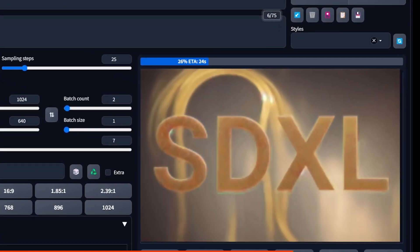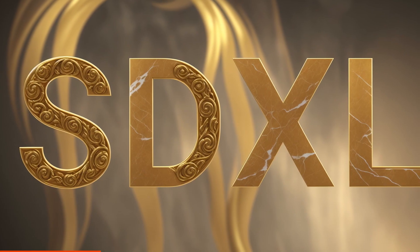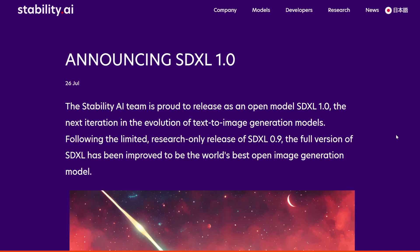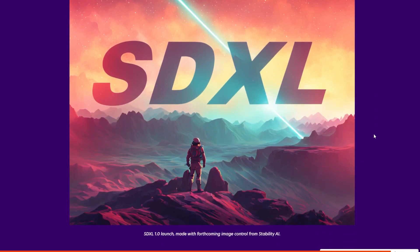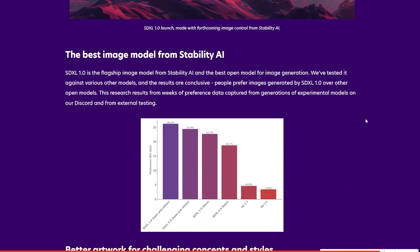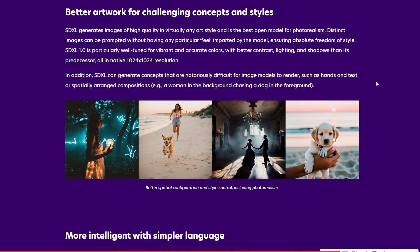SDXL, or Stable Diffusion XL 1.0, is the new release from Stability AI. Let's install it and run some tests. Here we can see the release notes — the announcement of the world's best open image generation model, as they said themselves. Apparently it's the best image model from Stability AI based on some research and tests. People prefer this model. It creates better artwork for challenging concepts and styles of high quality and in virtually any art style. And it's probably the best for photorealism — that was their aim.